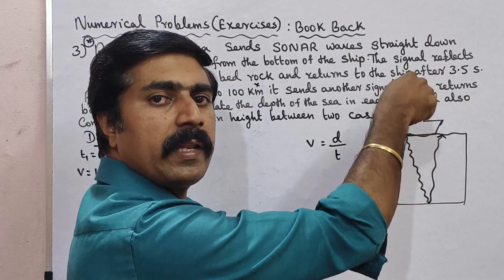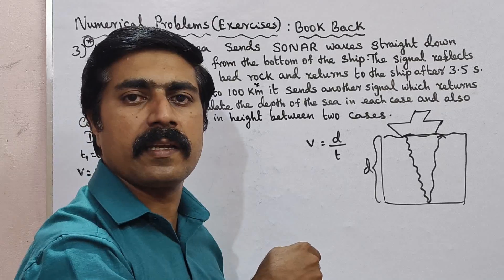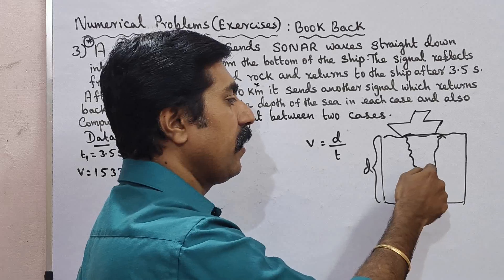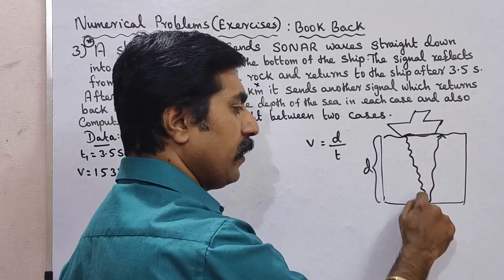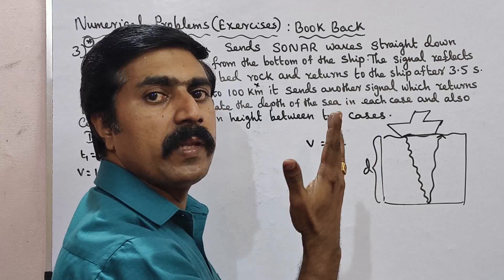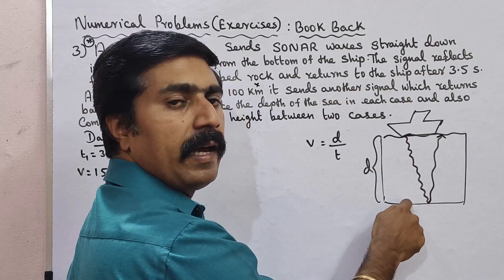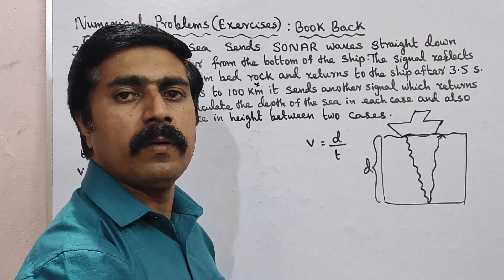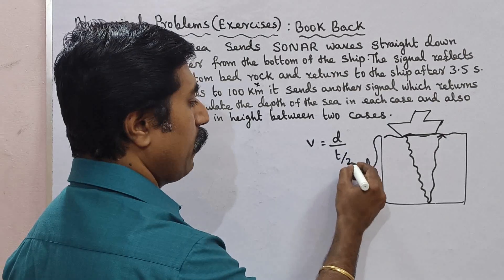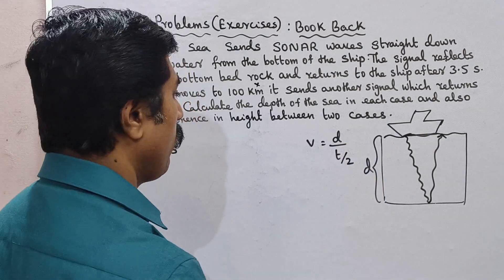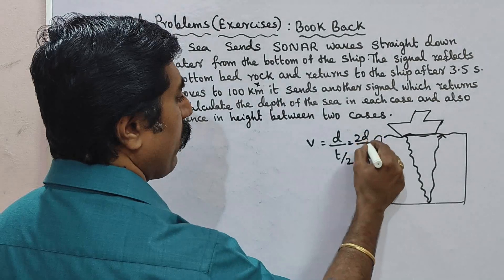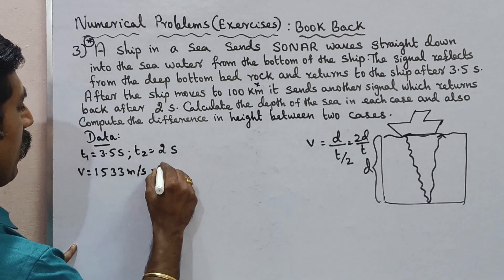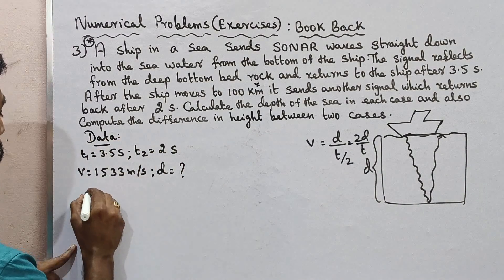So the signal takes 3.5 seconds total — that is the round trip time. Because we have the signal going down and coming back, so that is the full time. The depth is measured one way. So time will be divided by 2 in the formula: t by 2. So the formula for depth is: v equals 2d by t, which gives us d equals v times t divided by 2.